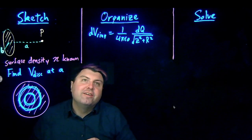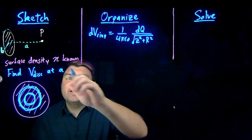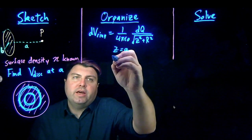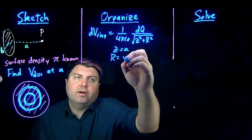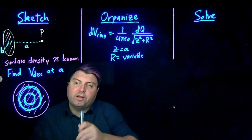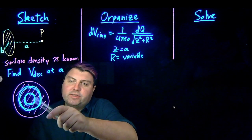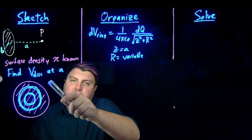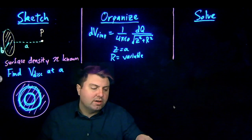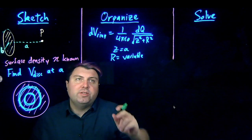We don't have to worry about direction — everything's coming up scalar. So in our organized step, we want to define everything that we need. Our z is a. Our capital R is a variable — it's not b. Each ring has its own radius: this ring has some radius, this ring has a different radius. So as we're summing up all these individual rings, each ring has its own different radius R, so R is a variable.